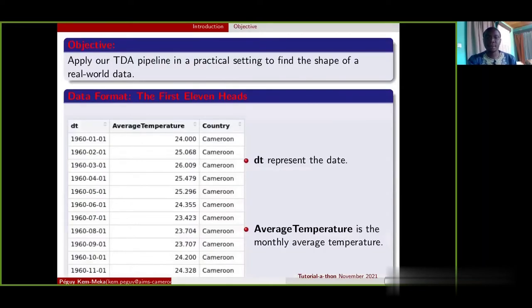The task of this present video is to use our TDA pipeline in a practical setting to find the shape of a real world data, namely the average monthly temperature in Cameroon. Our data are coming from Berkeley health data page and it is in this format. Here are the first 11 rows. Our data has three variables: the date, the average temperature, and the country.